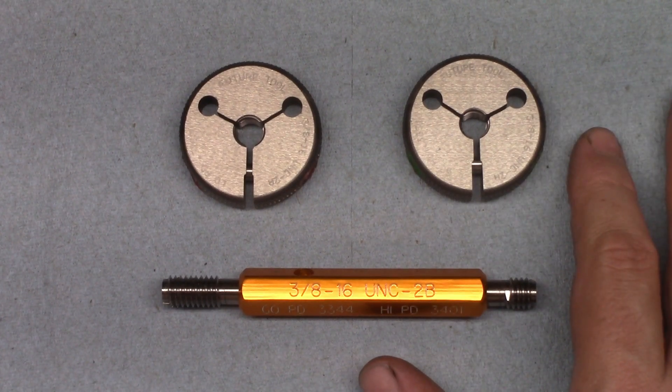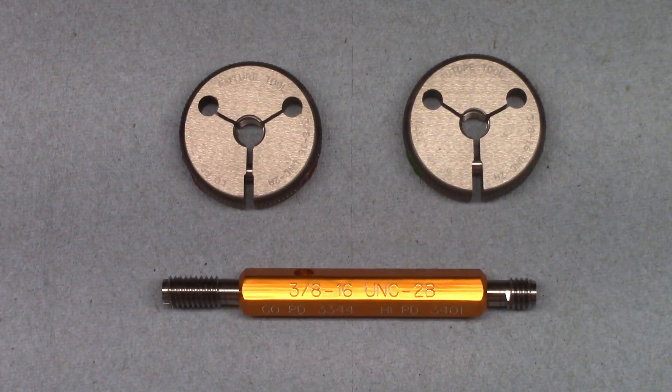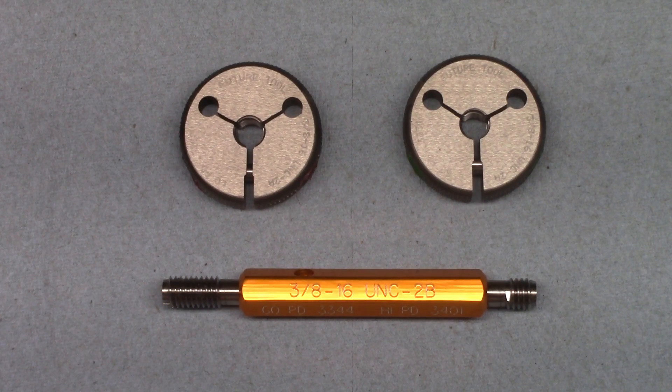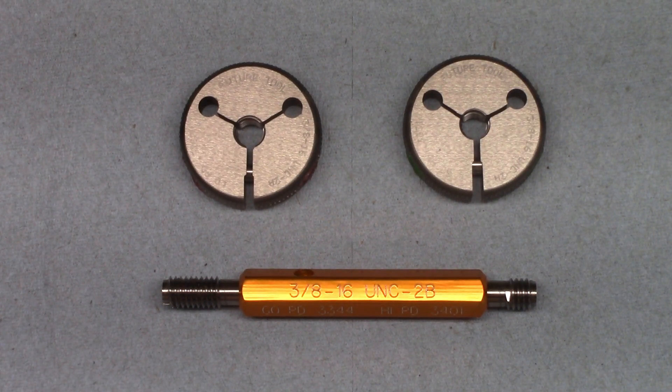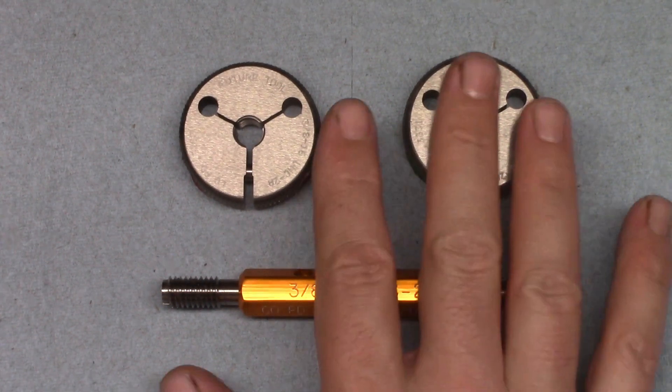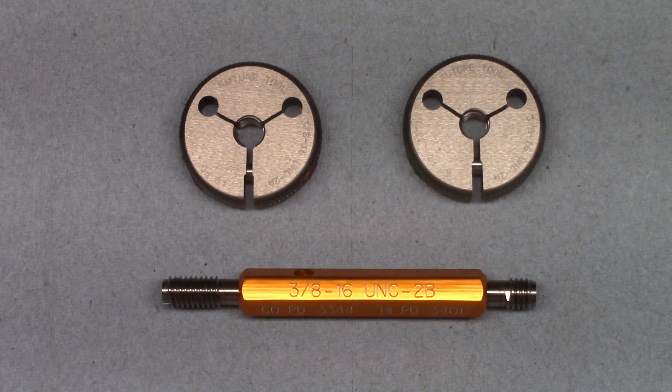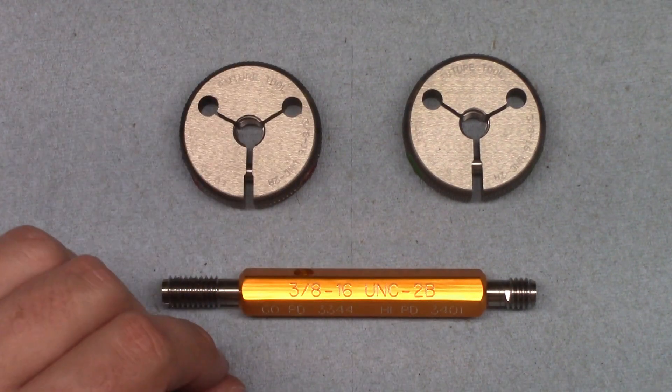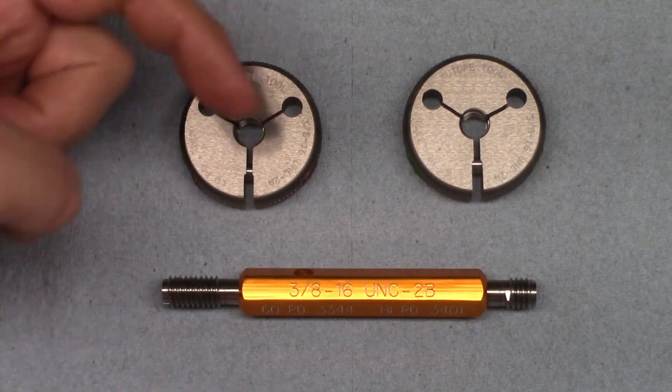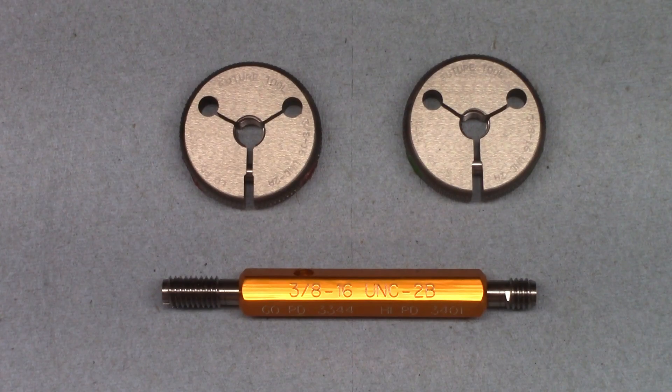A nut or screw from the hardware store is made to fit somewhere in its respective tolerance, and will most likely be somewhere in the middle of that range. So testing the fit with a commercially made nut or screw does not necessarily mean your part is in tolerance. I'll put a link to that video at the end of this one, as well as down in the description in case you haven't seen it.